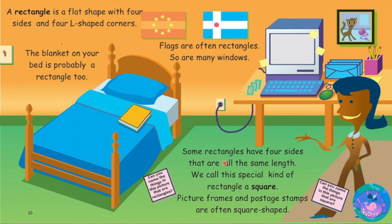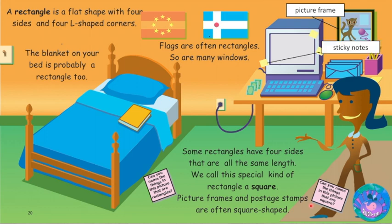Some rectangles have four sides that are all the same length — we call this special kind of rectangle a square. Picture frames and postage stamps are often square shaped. Can you name the things in this picture that are square? Picture frame, sticky notes, keyboard keys.